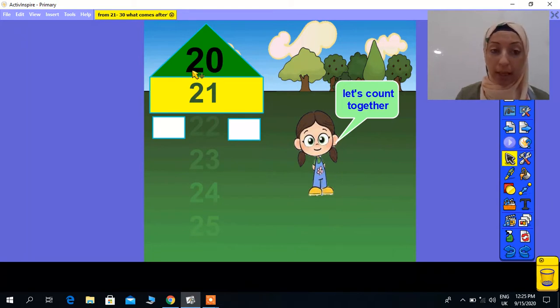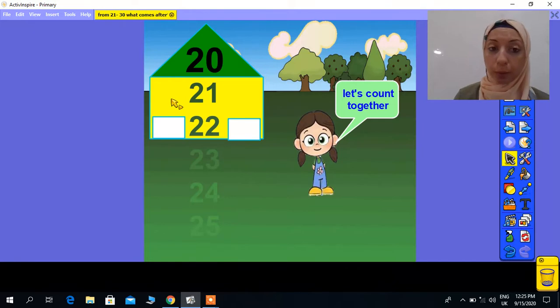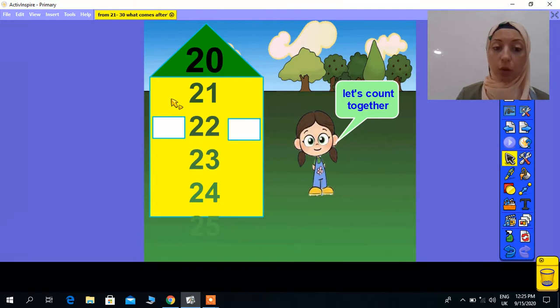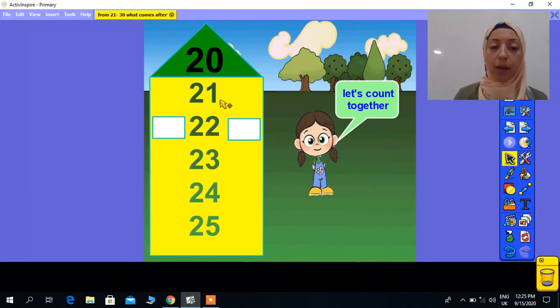After 20, 21, 22, 23, 24, 25. So counting: 20, 21, 22, 23, 24, 25. Again, 20, 21, 22, 23, 24, 25.